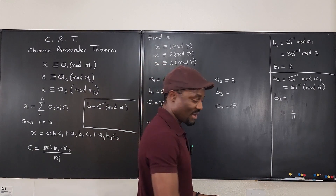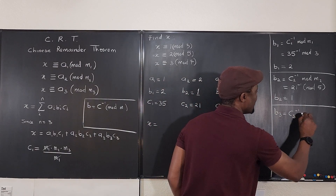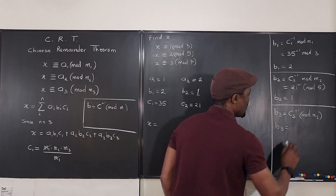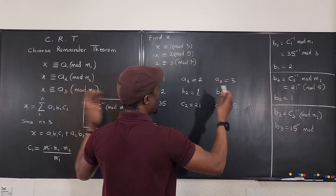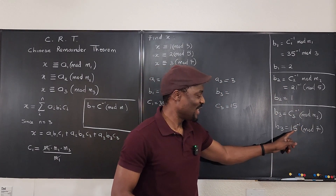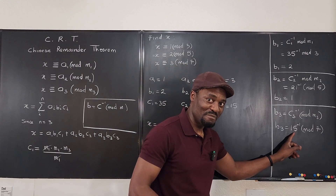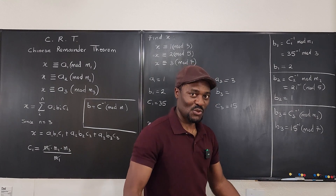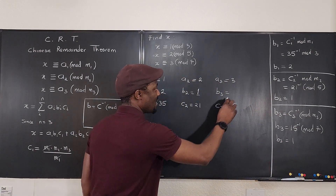For b₃, we need the inverse of c₃ mod m₃ — the inverse of 15 mod 7. Similarly, 15 divided by 7 is 2 remainder 1, so multiplying 15 by 1 already gives a remainder of 1 when divided by 7. Therefore, b₃ = 1. We now have all nine values and can fill in the final formula.